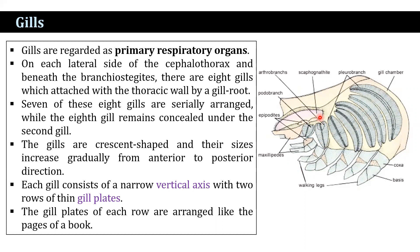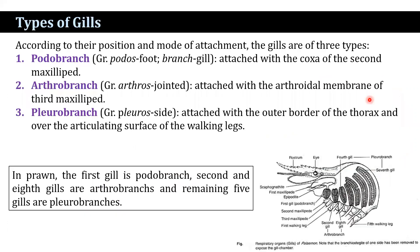The gills are present structures whose sizes increase gradually from anterior to posterior direction — the anterior gills are small in size while the posterior gills are larger. Each gill consists of a narrow vertical axis and contains two rows of gill plates. The gill plates of each row are arranged just like the pages of a book.